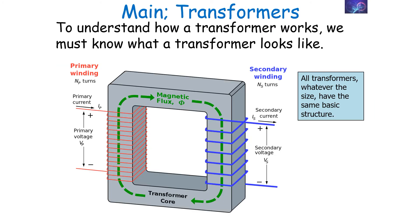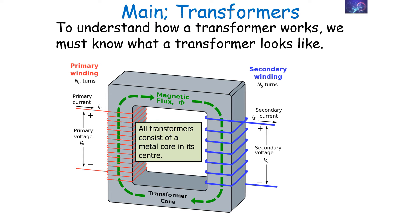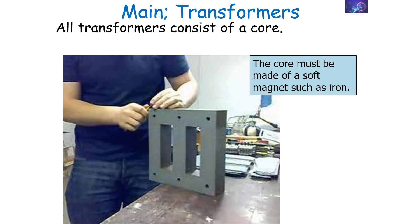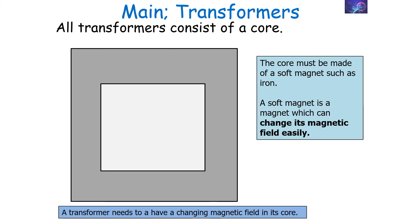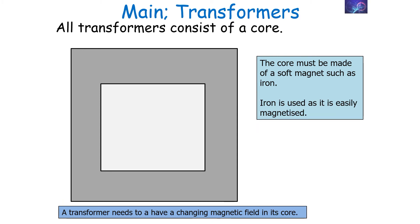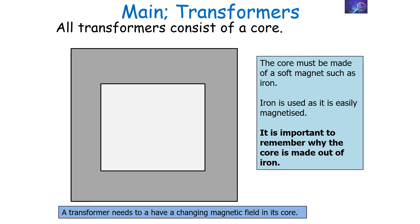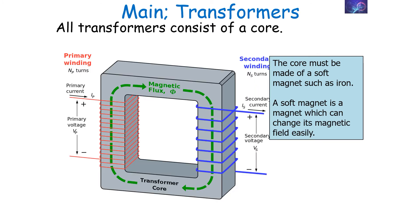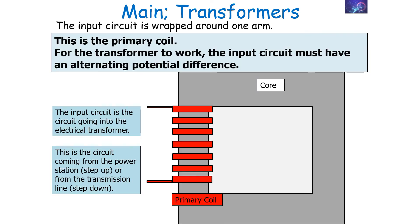To understand how the transformer works, we must know what a transformer looks like. All transformers have the same basic structure. They consist of a metal core at their centre, which must be made of a soft magnet such as iron. A soft magnet is one which can change its magnetic field easily. Iron is always used as the core material because it's easily magnetised and can have a change in magnetic field. You then wrap a circuit around one arm of the transformer core — this is called the primary coil.